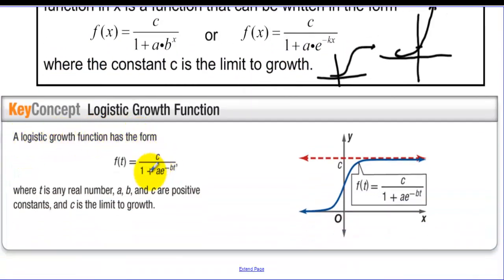Logistic growth function has the form where t is any real number a, b, and c are positive constants and c is the limit to growth. So here's the shape of a logistic function. And it does start out growing exponentially, but then it's going to level off due to circumstances. Like you can't have 5 billion fish in a pond. There's just not going to be enough room, enough food, enough oxygen. So there's going to be a limit to the growth of let's say fish in a pond.